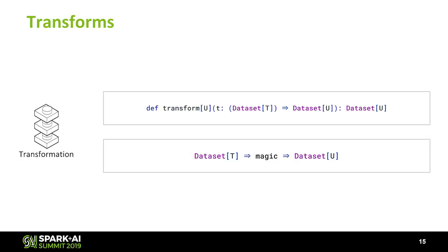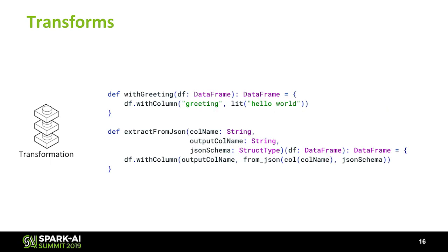If we go to transformers — I don't know if you're familiar with them — they are native in the Scala API. Given a dataset, a transformer returns another dataset with some magic inside that transforms the data. Here we have some hello world examples: given a data frame, it's adding a new column with a literal 'hello world'. Another one is extracting from JSON — given an input column, output column, and a schema, it extracts this data and returns it as a field. It's quite basic, just one line, but it's easier to read that a function is extracting from JSON than writing it all out explicitly.